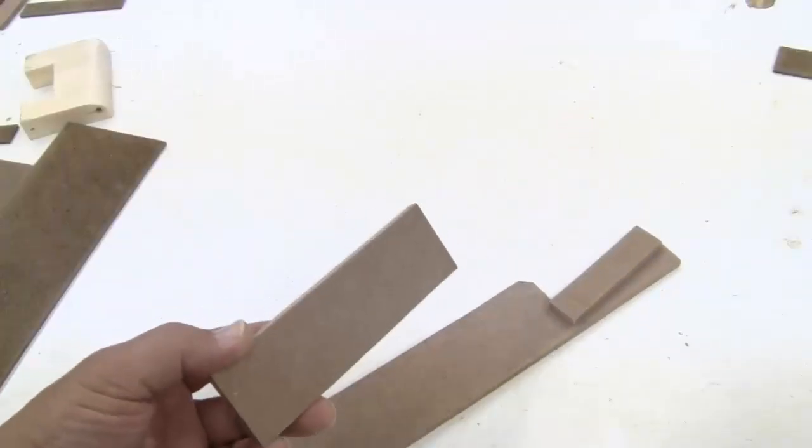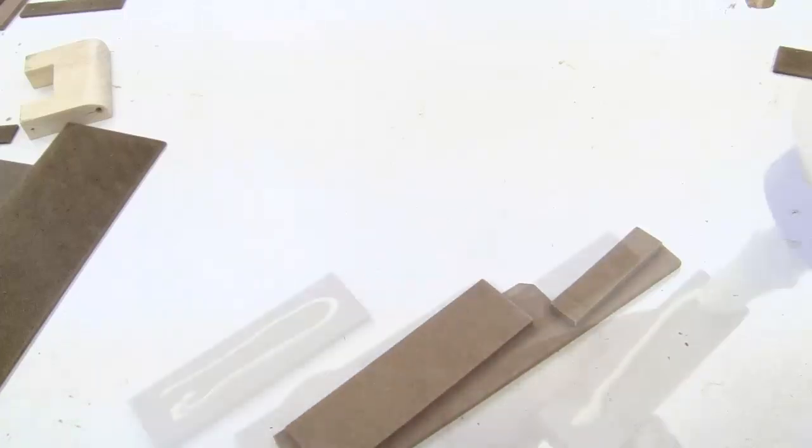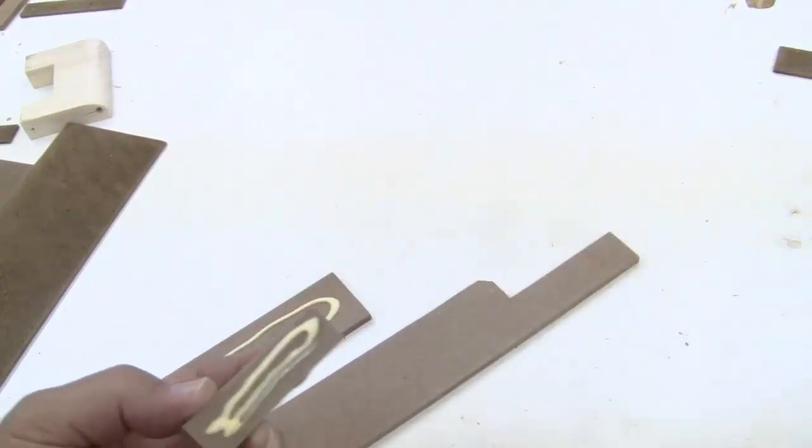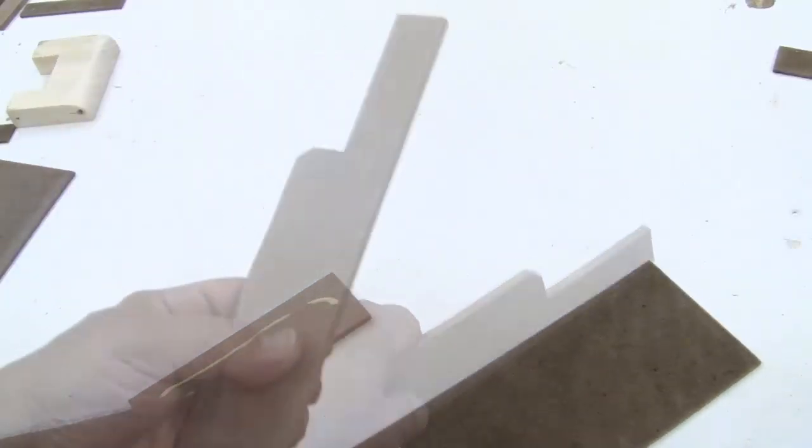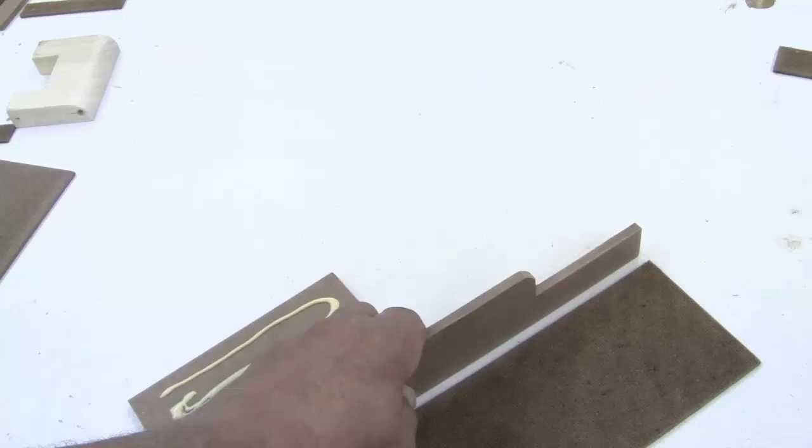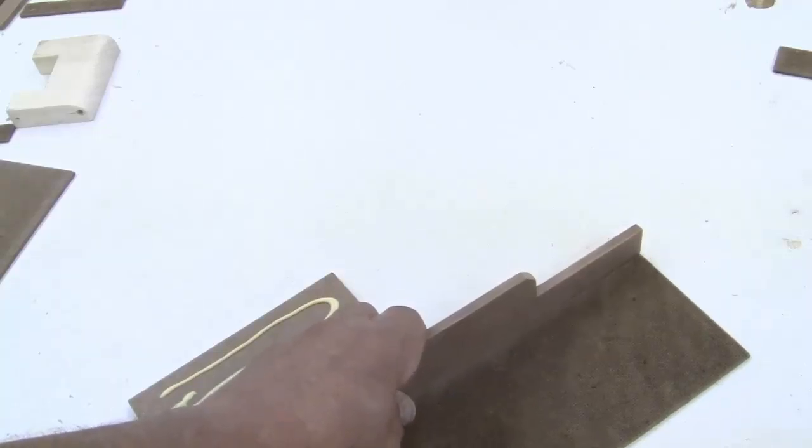I'm going to start by gluing the fillers onto the side pieces. And in order to position them properly, I'm going to use the bottom. I'm going to place the side piece over here, and I'm going to push the bottom over there.